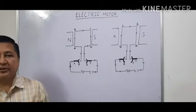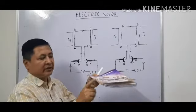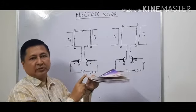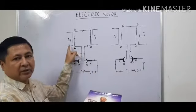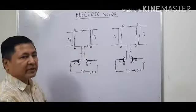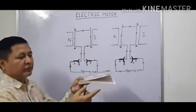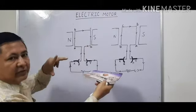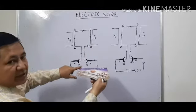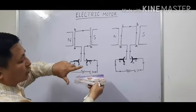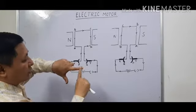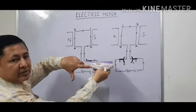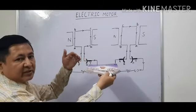Consider a rectangular coil: A, B, C, D. When the current enters the coil from A to B and the coil is placed perpendicular to the magnetic field — that is, the field is directed from North to South — applying Fleming's left-hand rule: the index finger points in the direction of the magnetic field from North to South, the middle finger shows the current direction from A to B, and the thumb points downward. So on side AB, the force is exerted downward.